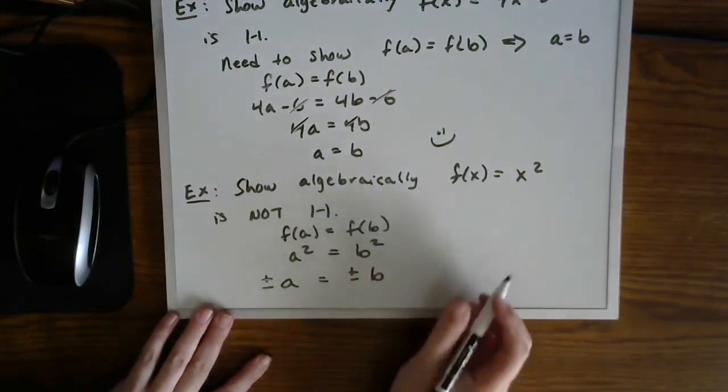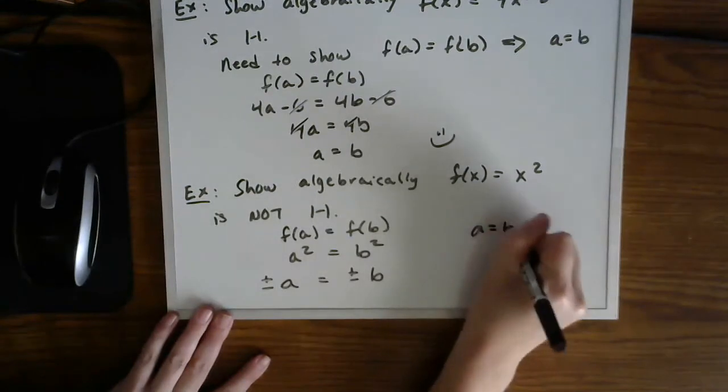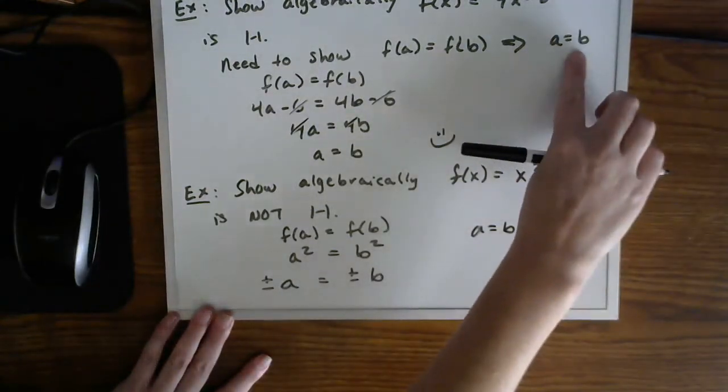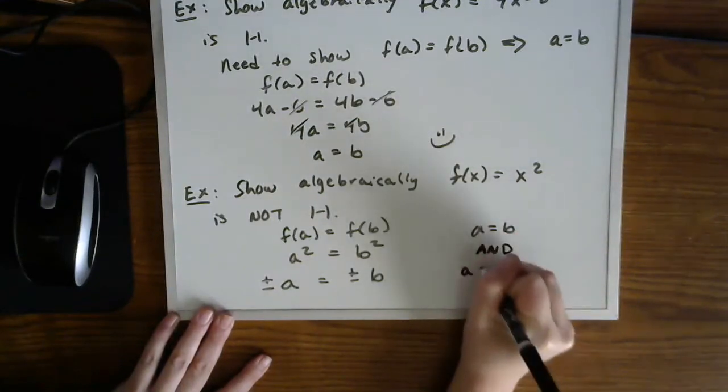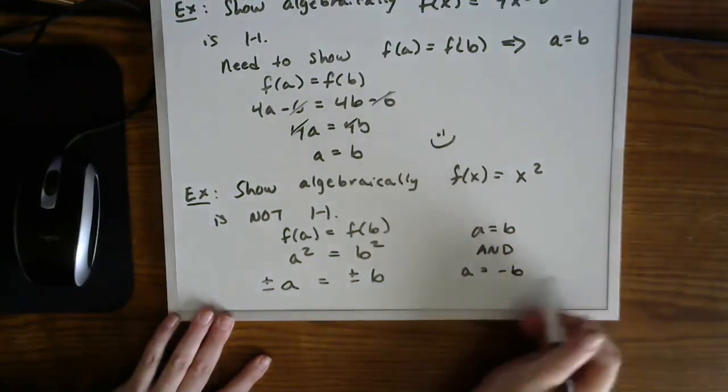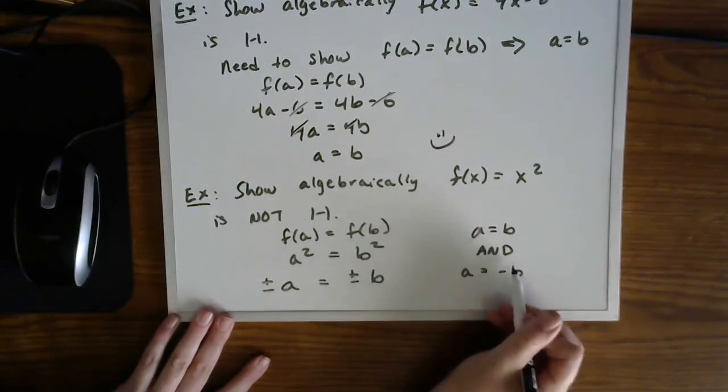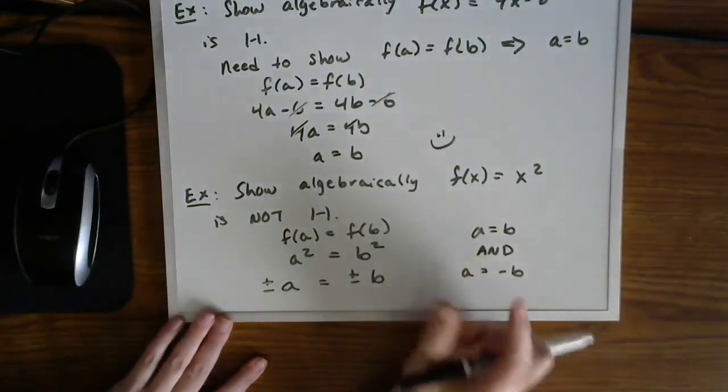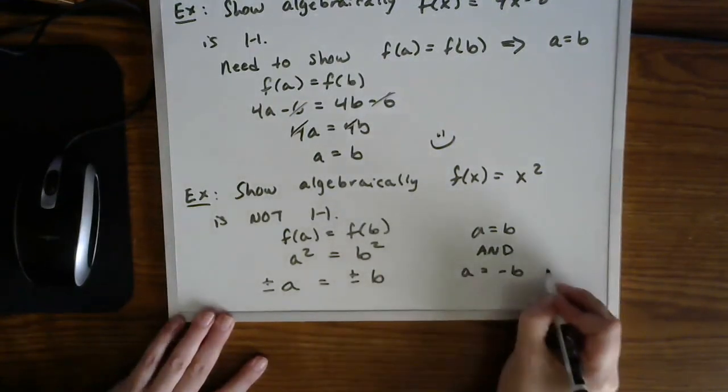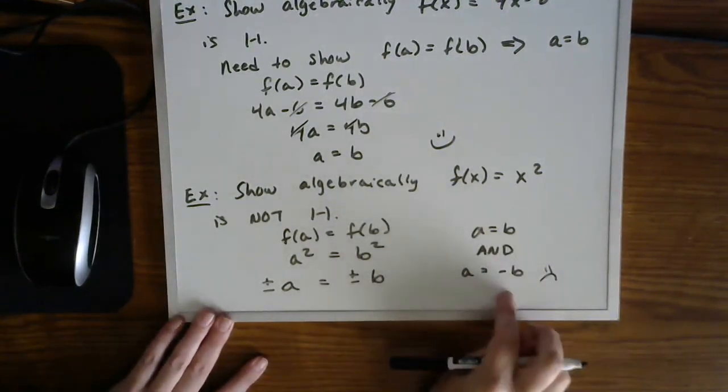So what that tells me is that a equals b. So it did satisfy this, but the problem is a could also equal negative b. So this is the issue. We can't have that in the definition. That's where you see the horizontal line failing. So it's because of that that you have a problem.